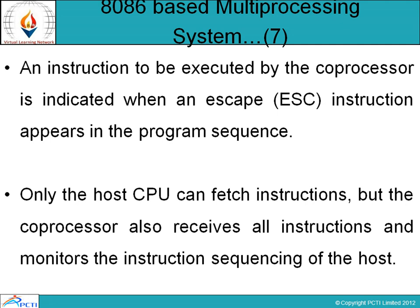An instruction to be executed by the coprocessor is indicated when an ESC instruction appears in the program sequence. To identify that coprocessor instructions are being executed, we use the ESC instruction. Only the host CPU can fetch instructions, but the coprocessor also receives all instructions and monitors the instruction sequencing of the host.